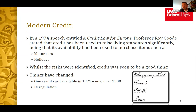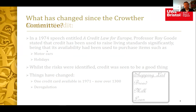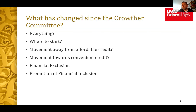Looking at modern credit: the Crowther Committee of 1971 and Professor Roy Goode's initial view was that credit is there to purchase motor cars, holidays, and home improvements. But we've seen significant growth in access to credit — in 1971 there was essentially one credit card; now there are over 1,300. The ease with which people can gain access to credit remains as relevant in 2021 as when it was the subject of my PhD.